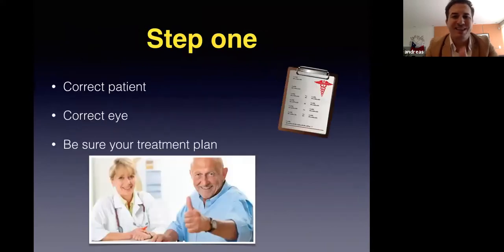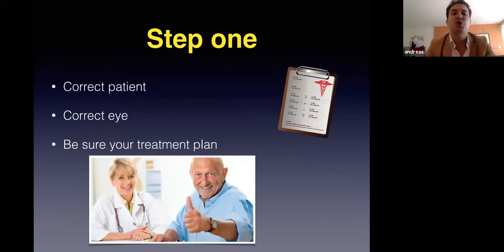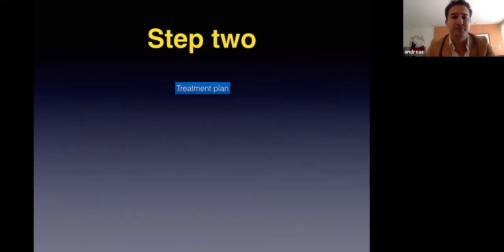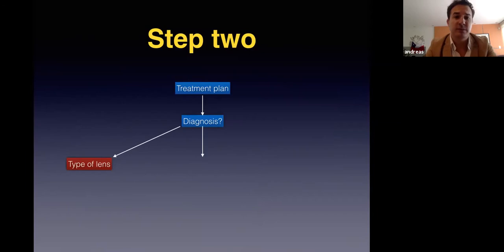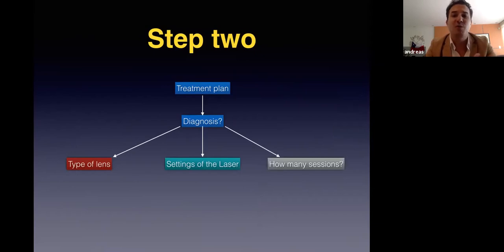Let's go step by step. Step one — very important and basic: be sure the patient in front of you is the correct patient, confirm which eye you are going to treat, and be sure of your treatment plan. Step two — the treatment plan: know the diagnosis, choose a lens, set the laser parameters, and decide how many sessions you will use to treat this patient.